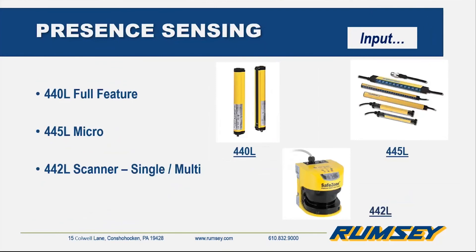For presence sensing devices, we have light curtains — the 440L and the 445L. These have been around for a little while. The 440L is a full feature that can do cascading, blanking, muting, and some different features like that. Then you have the safety scanner on the bottom — single zone or multi-zone. You can configure the safety scanner with a specific safety field that you can manipulate and change per your application. With the multi-zone, you can have two or three safety zones already pre-configured and switch back and forth between them with just a simple input to the scanner.